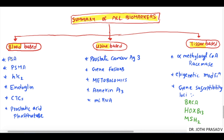Blood-based markers include PSA, which we have discussed, and PSMA — a similar glycoprotein produced by the secretory acinar epithelium of the prostate. HK2 is human kallikrein 2, a transmembrane glycoprotein used in diagnosing prostate malignancy. CTC refers to circulating tumor cells identified using CD45 and EPCAM markers. Prostatic acid phosphatase is also used to identify malignancy.